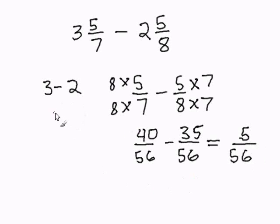Now let's work on the whole number. 3 subtract 2 is 1. And then we combine the whole number with the fraction. And our resulting answer is 1 and 5 over 56. And this completes our problem.